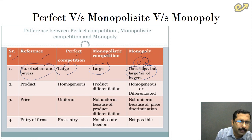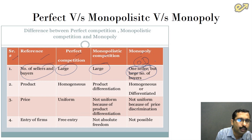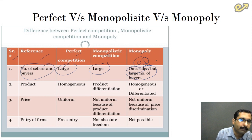The best feature of the monopoly market is that there are no close substitutes for the goods and services produced by that one seller. In a monopoly market, there is one seller and no close substitutes, and that is what gives the seller monopoly over the market.